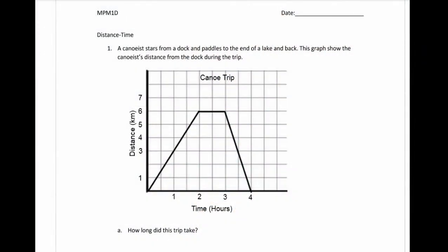In today's note we are going to look at distance and time graphs. Looking at this first graph, a canoeist starts from a dock and paddles to the end of a lake and back. This graph shows the canoeist's distance from the dock during the trip. Distance in kilometers is the dependent variable on the y-axis, and time in hours is the independent variable.